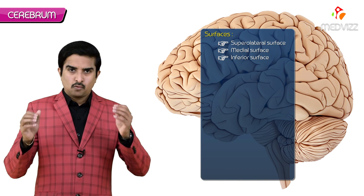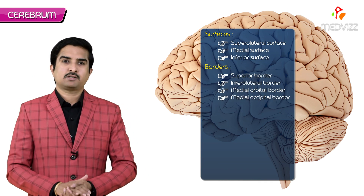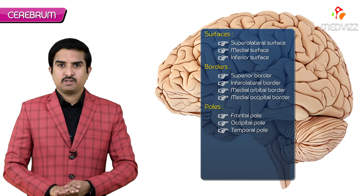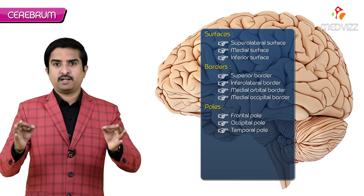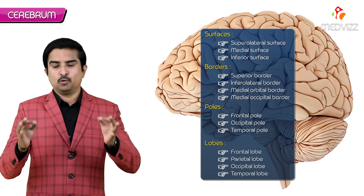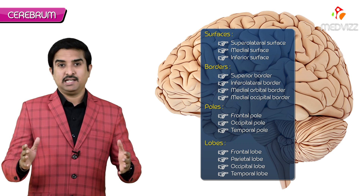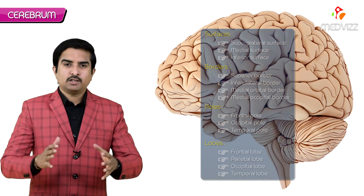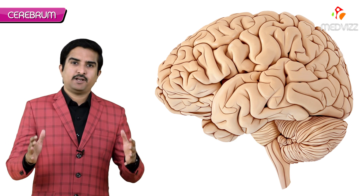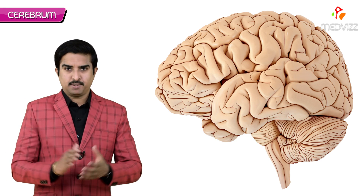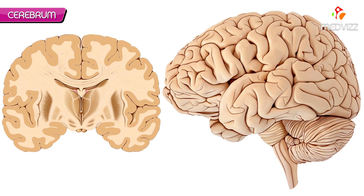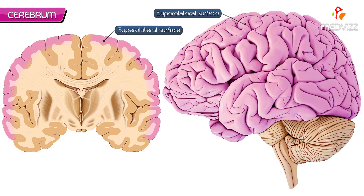Now let us discuss the external features of the cerebrum. Each cerebral hemisphere has three surfaces, four borders, three poles, and is divided into four lobes. The first surface is the supralateral surface, which is convex in nature.